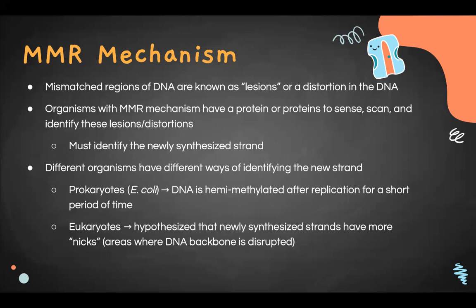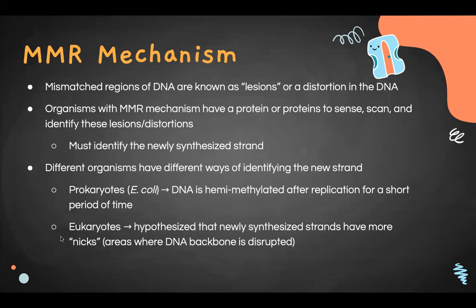In E. coli, cells normally methylate their DNA, but newly replicated DNA is unmethylated for about 20 minutes — that's how the cell identifies the new strand. For eukaryotes, it is hypothesized that newly synthesized strands have more nicks — disruptions in the DNA backbone — since DNA ligase hasn't yet filled in all the gaps. This is the leading hypothesis, though not yet visually proven.